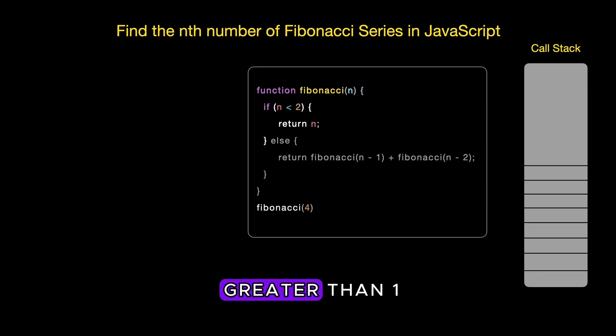But if n is greater than one, we move to the else part where the real magic happens. Here, we call our Fibonacci function twice, once with n minus 1 and once with n minus 2 and add the results together. This is recursion where a function calls itself with new arguments.